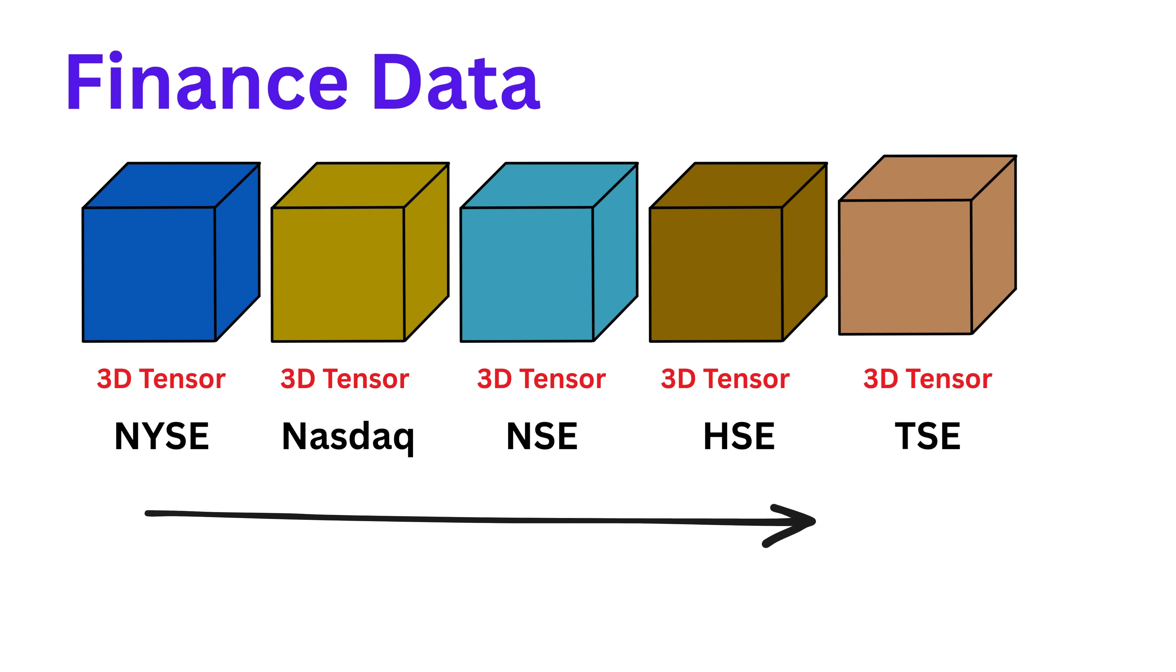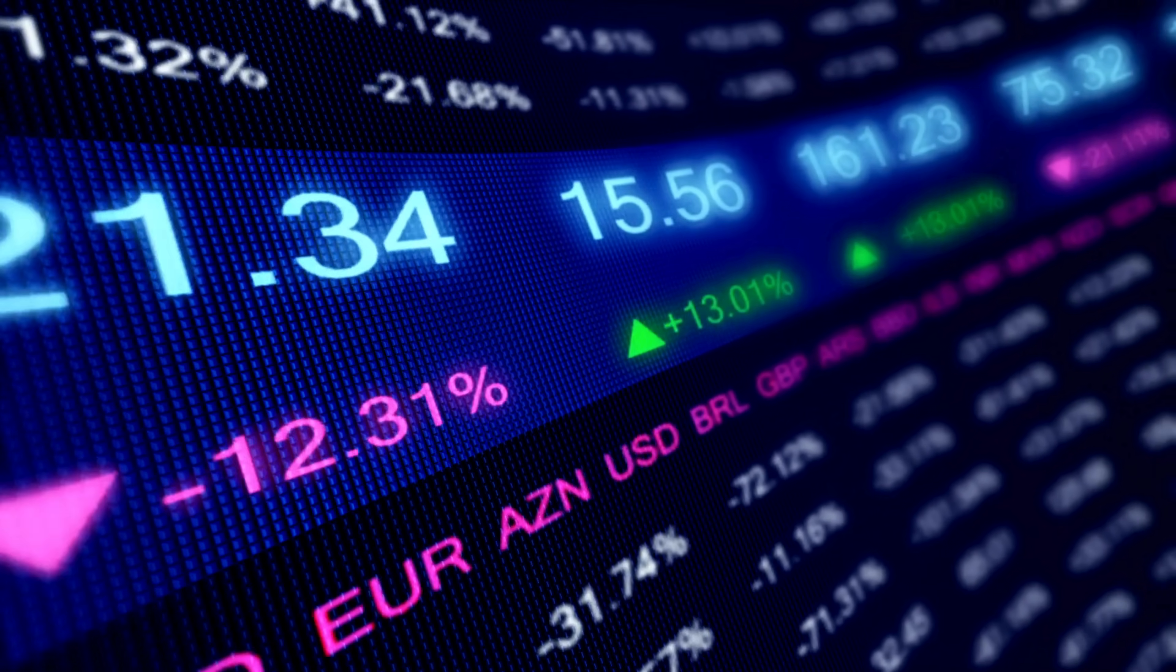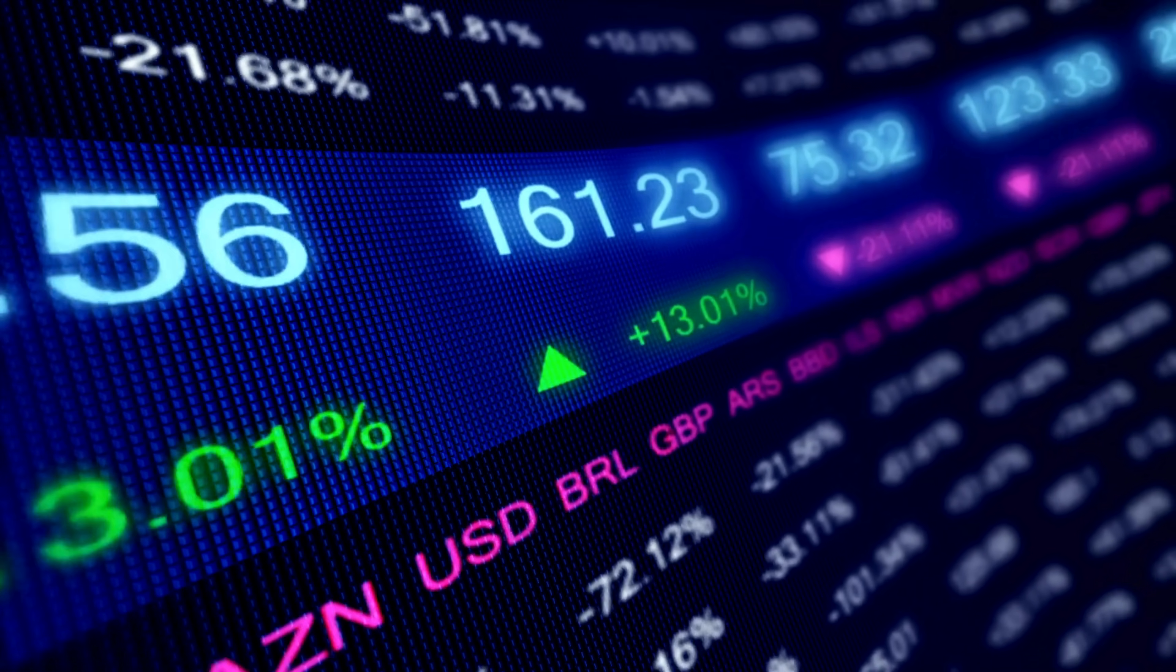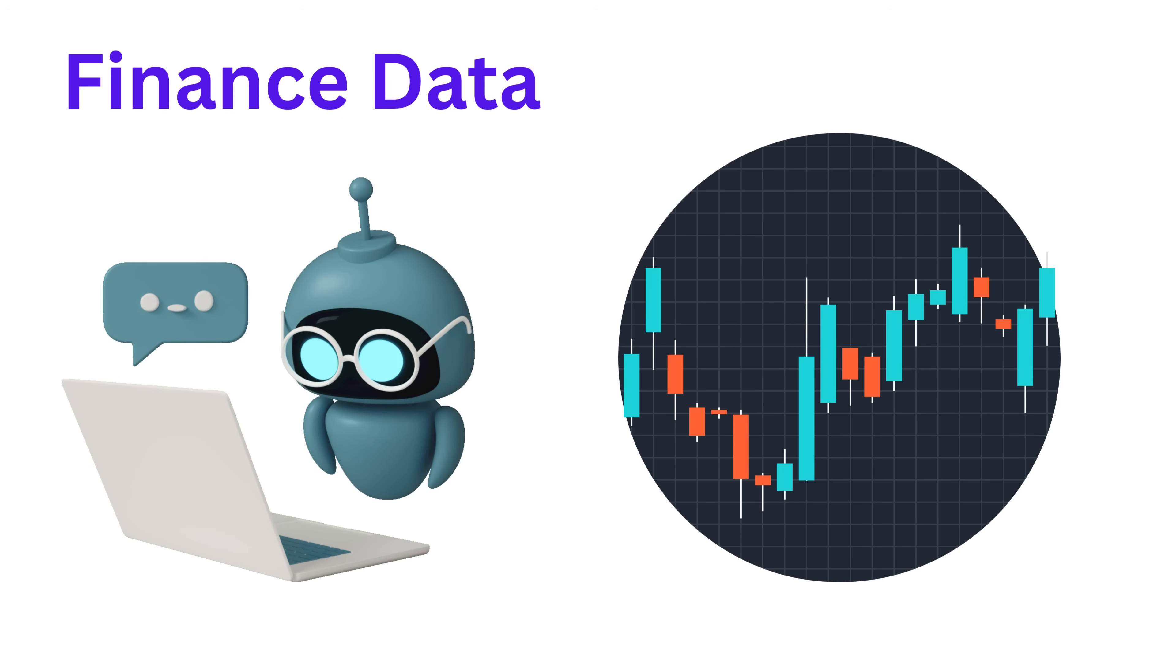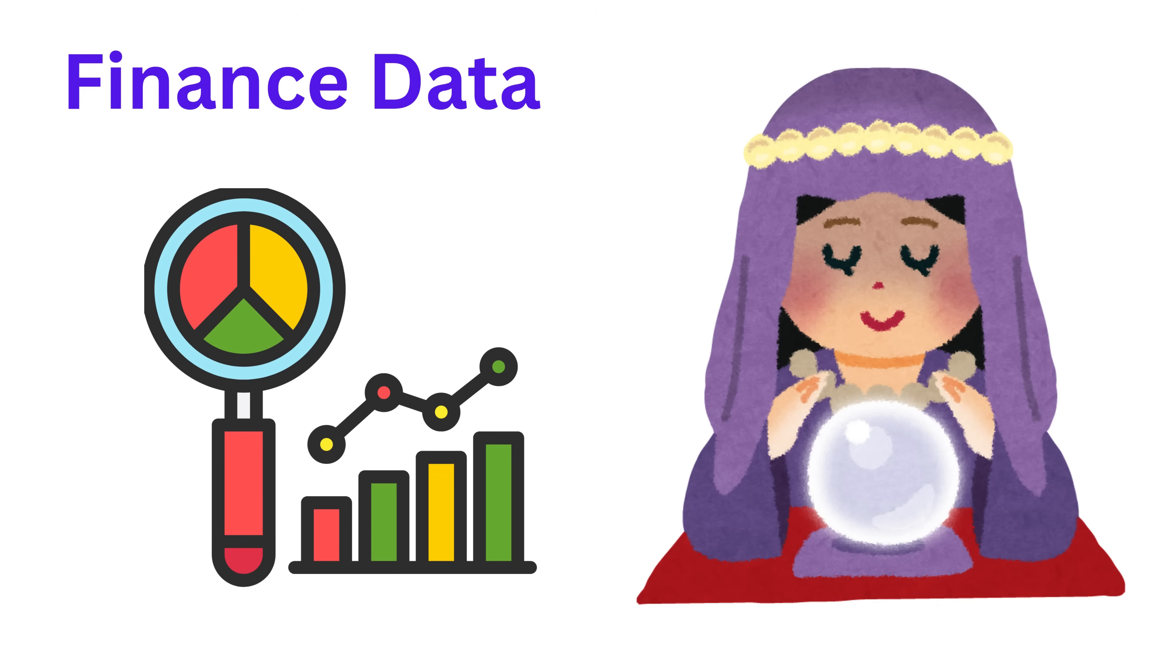If you stack these cubes together, maybe side by side, you're now forming a 4D tensor, a structure that can hold multi-layered, multi-source financial data. This is exactly how deep learning systems handle huge data sets, by organizing them into higher dimensional tensors. These tensors help financial analysts work on massive data sets, detect patterns, and make predictions.